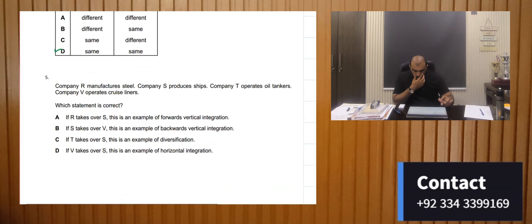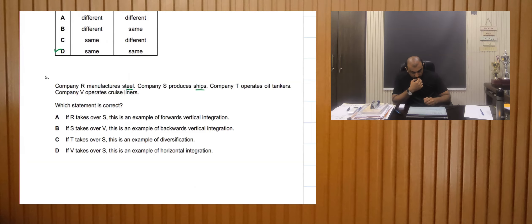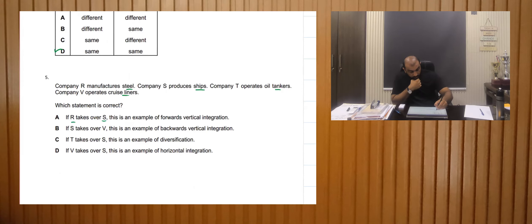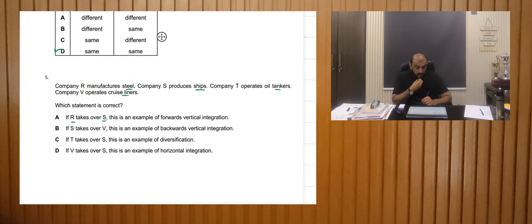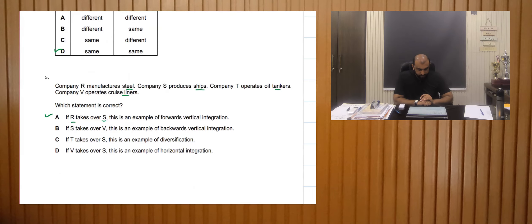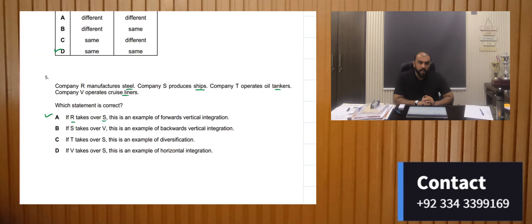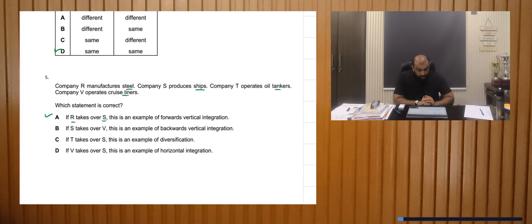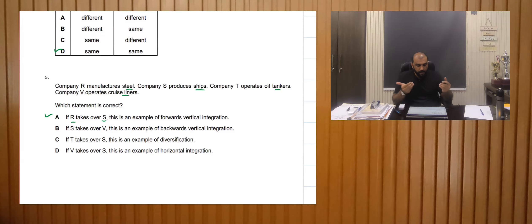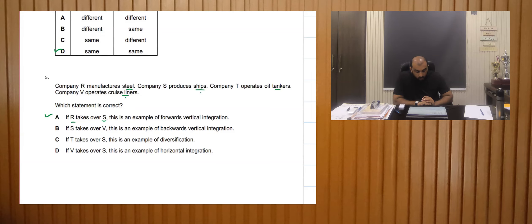R manufactures steel, S produces ships, T is an oil tanker company, V operates cruise liners. R takes over S — R is steel and S is ships, so S is a customer of R, making this a vertical forward integration. If S takes over V, that is also a forward integration because S produces ships and V operates cruise liners, not backward integration.